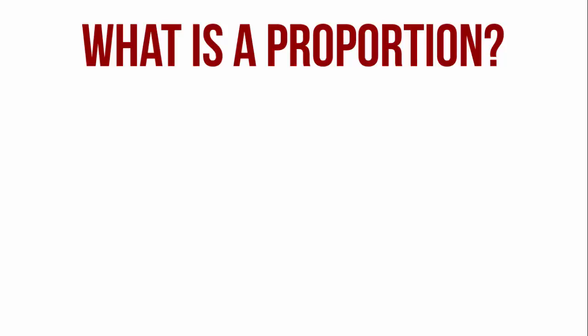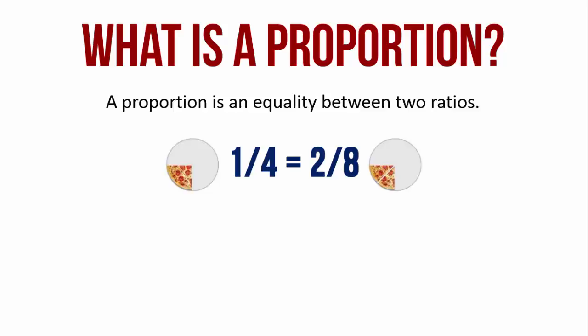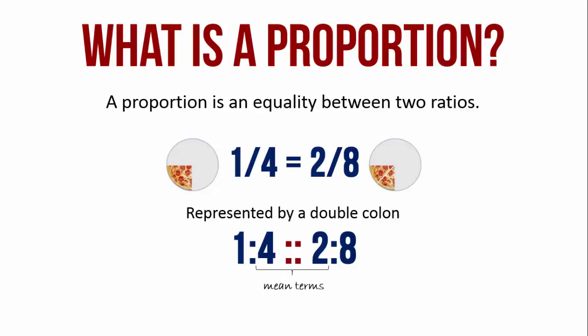What is a proportion? A proportion is an equality between two ratios. It is represented by a double colon. In a proportion, the middle terms are called the mean terms and the two extreme terms are called the extreme terms.